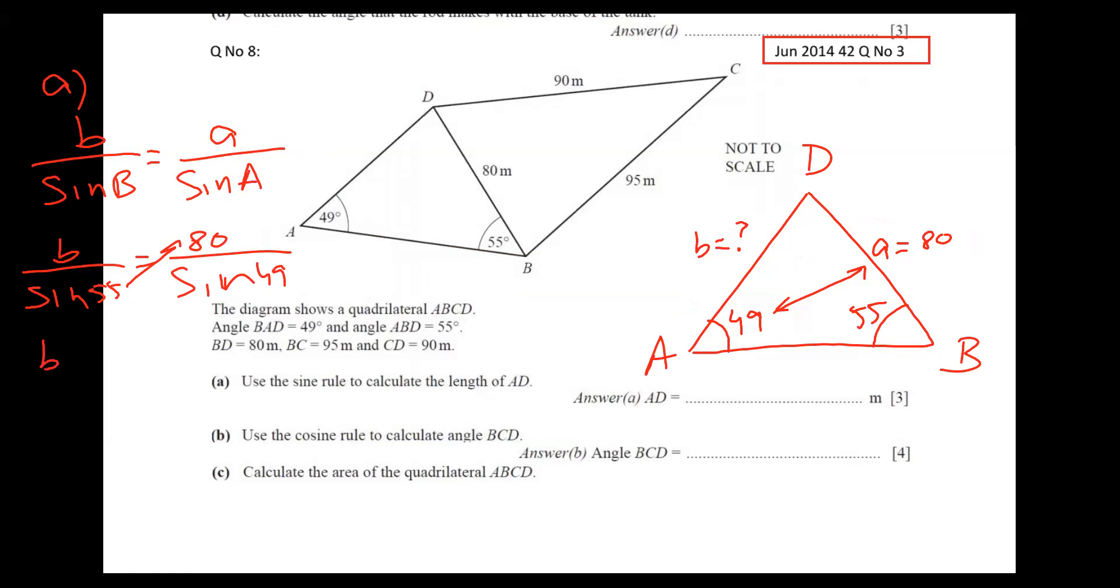And sine capital A - capital A you can see here is 49 degrees. That's it. So this number is dividing down, we'll multiply up. First I'll show step by step. So 80 times sine 55 divided by sine 49. Just a matter of typing in calculator.